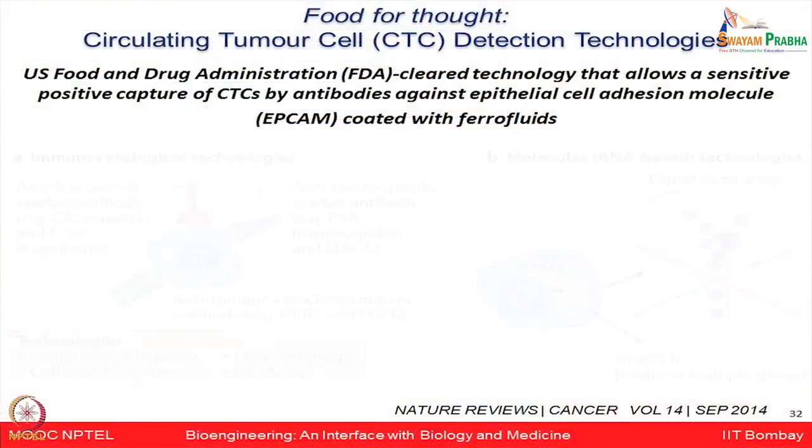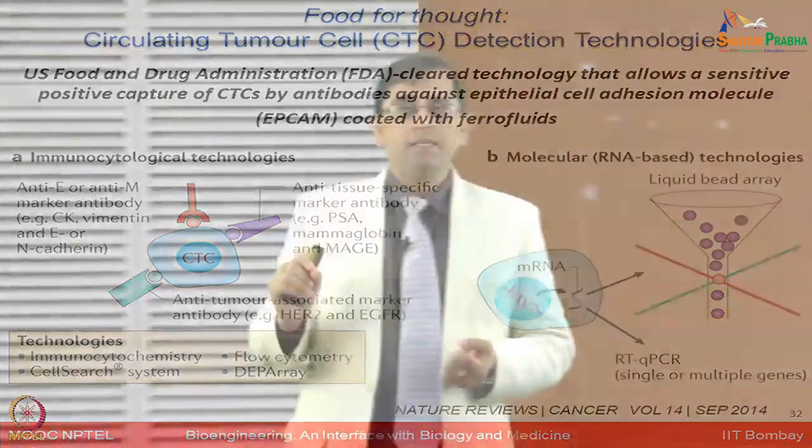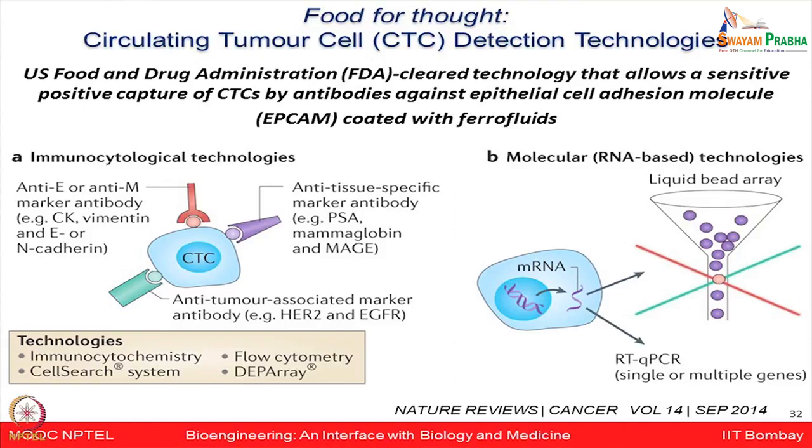There is a strong need to know basic biology and also implement it at the technology level — we need accurate detection technologies to detect cancer cells early. There is emphasis on detecting circulating tumor cells with new detection technologies. The US FDA has cleared some technologies that allow very sensitive capture of circulating tumor cells using antibodies against EPCAM (epithelial cell adhesion molecules) coated with certain ferrofluids.